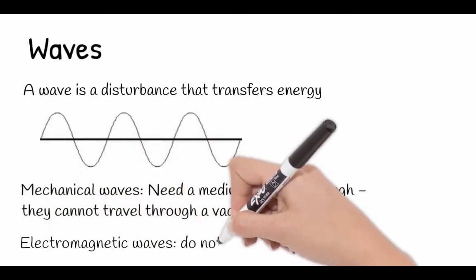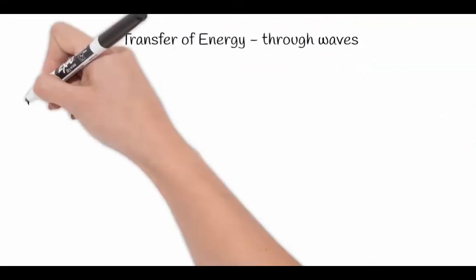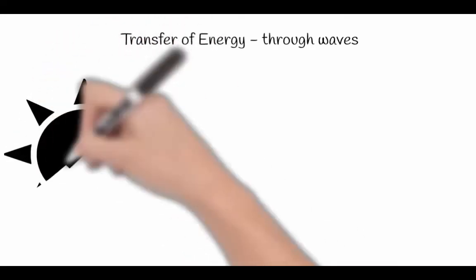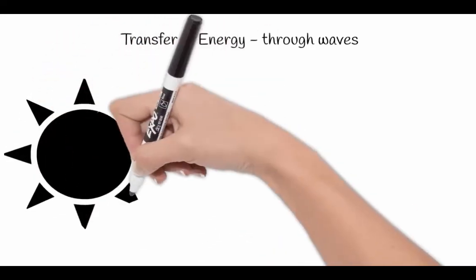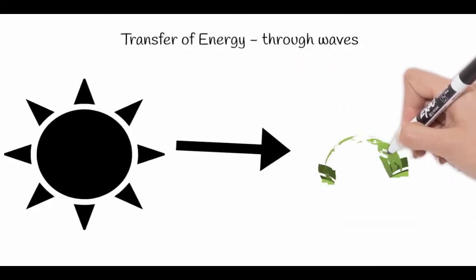Electromagnetic waves do not need a medium to pass through. For example, the light from the sun can travel through outer space, which is a vacuum, to reach the earth. So the energy from the sun reaches the earth through the vacuum, which is outer space,